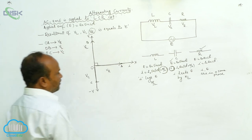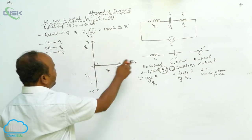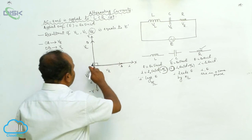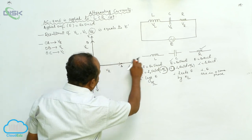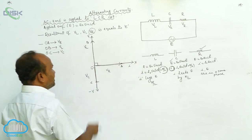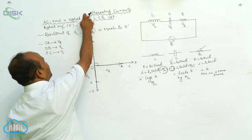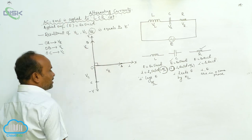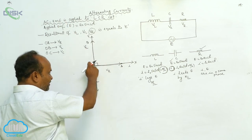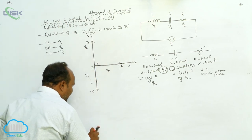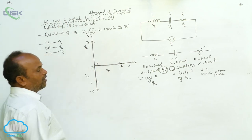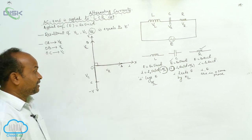Now, here, why we are taking Vr along the x-axis, Vl along the positive y-axis, and Vc along the negative y-axis is because of the phase relationships between voltage and current in each component.